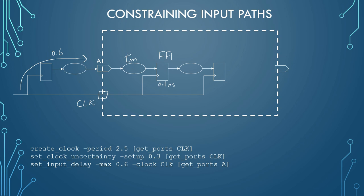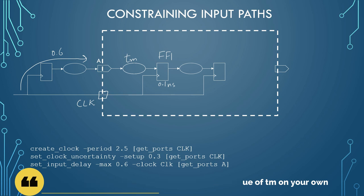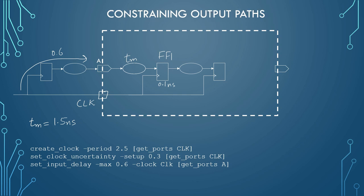Now you are supposed to calculate TM. You can pause the video and try calculating the value. If you have not seen lecture 15, please go to the description below and watch that video first, then try to calculate this value. The value of TM, if calculated correctly, will be 1.5 nanoseconds. The portion of logic on the left is actually present in somebody else's design — for them it is an output port, while for us it is an input port.